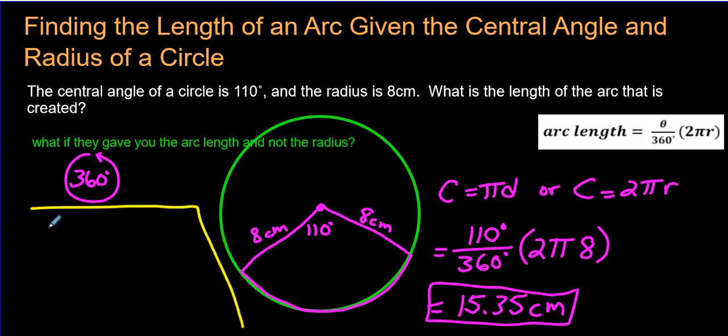Well, let's do that over here in this corner right here. What if they gave us the arc length, and we knew it was 15.35, and you use this same formula over here. So arc length equals, what if they gave you the arc length and not the radius? So we don't know the radius, let's say, but we know that it's still 110 degrees. So we know it's still 110 over 360 times 2 pi r. How would you solve this? How would you find out what the radius is? You're supposed to find that out. We know we want 8 as an answer here.